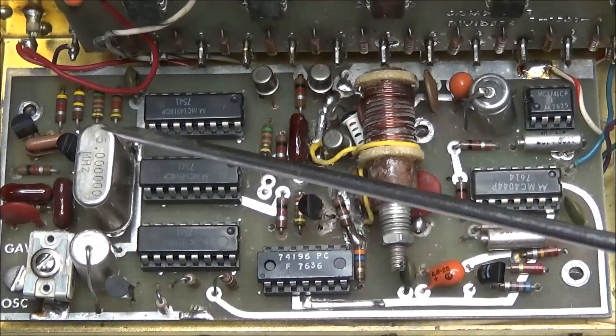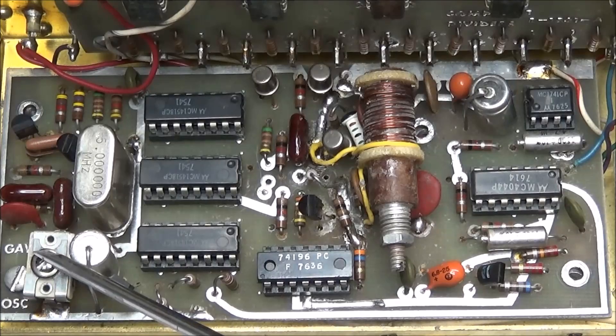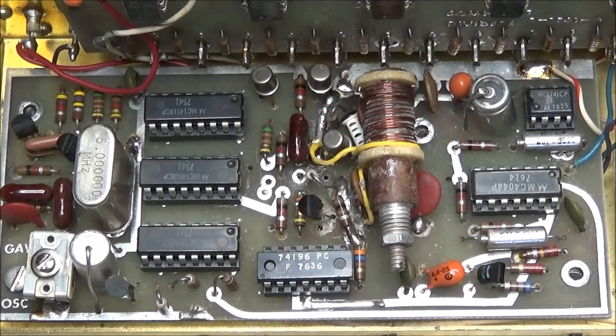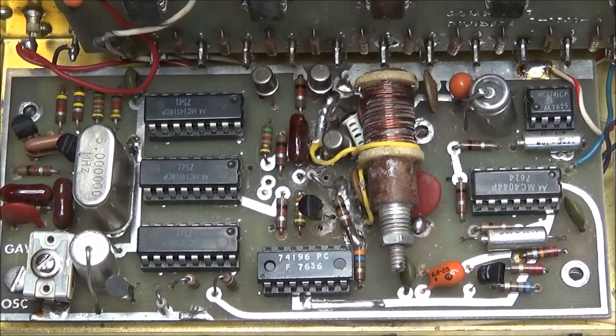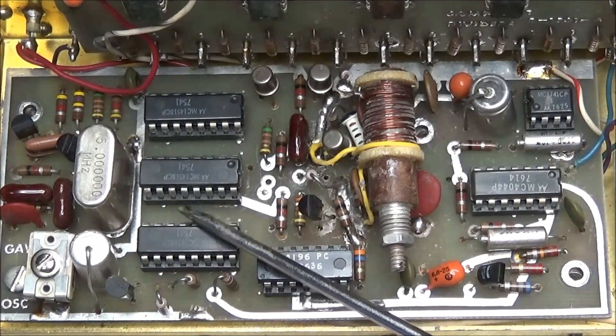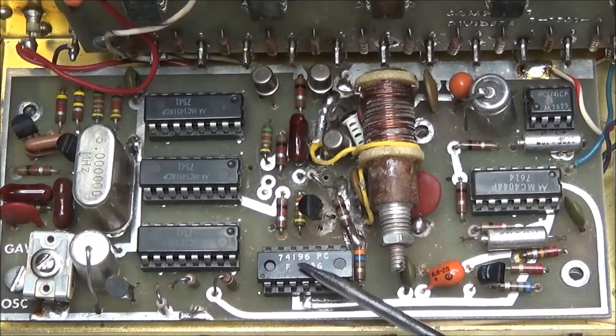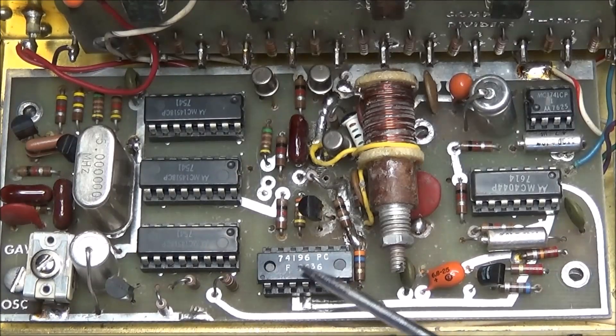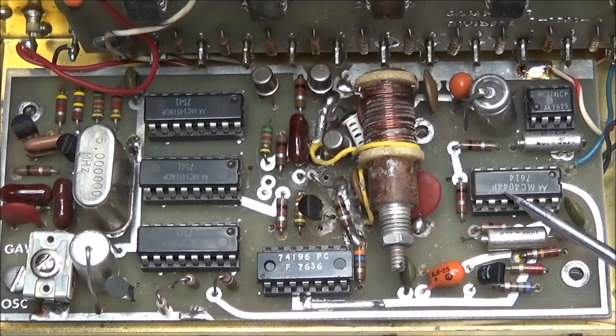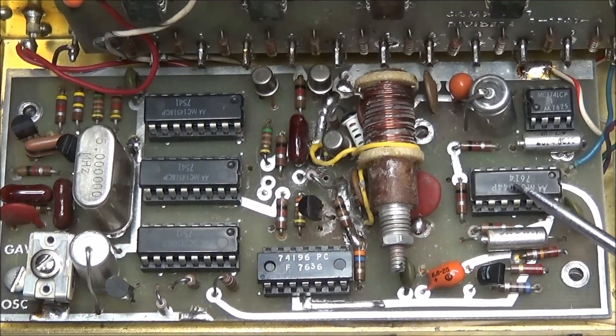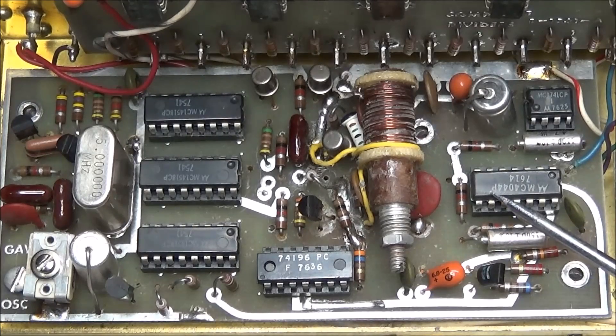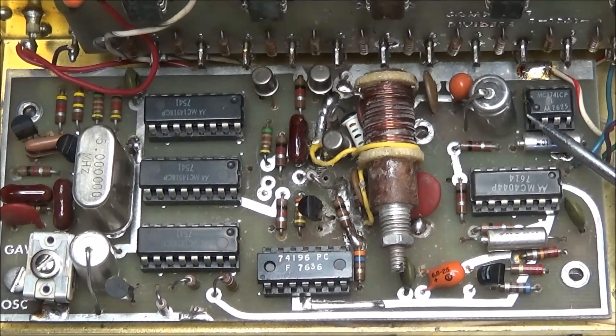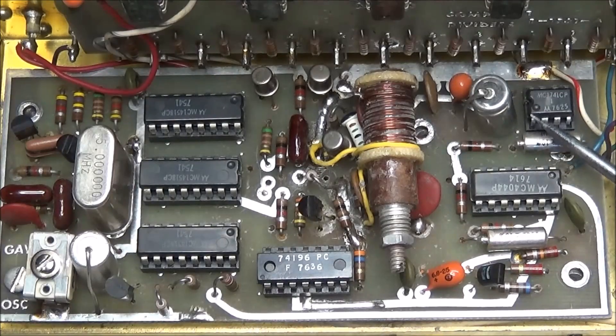So like yesterday, we were talking about the 5MHz crystal and a trim capacitor for it. We got three ICs here. These are MC14518CP. What these are, are dual up counters or dual BCD counters. Here we have a 74196PC. From what I can find out, this is also a counter chip. Over here on this chip is our phase detector, which is the MC4044P. Then this little chip over here on the side is a MC1741CP, which shows as an op amp.